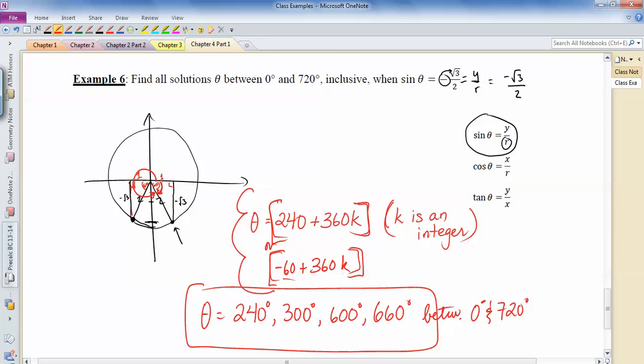By the way, this thing right here, that is called our general solution. Whereas this thing down here is more specific, that's based on certain conditions that we have. A lot of times I'll end up asking for a general solution.